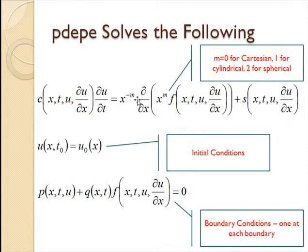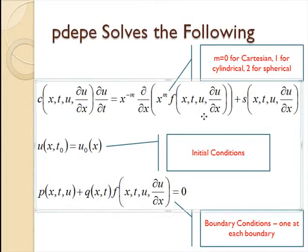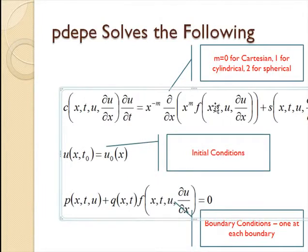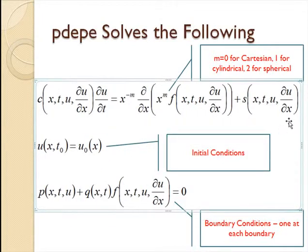First of all, this m thing. m is zero for Cartesian coordinates, one for cylindrical and two for spherical. For us, we're going to do everything in Cartesian coordinates. So m is zero and these terms just go away. But now what we need to do is give MATLAB this function c, the function f, and the function s.